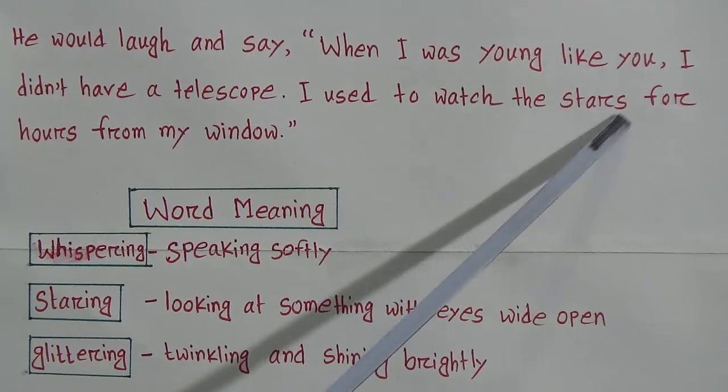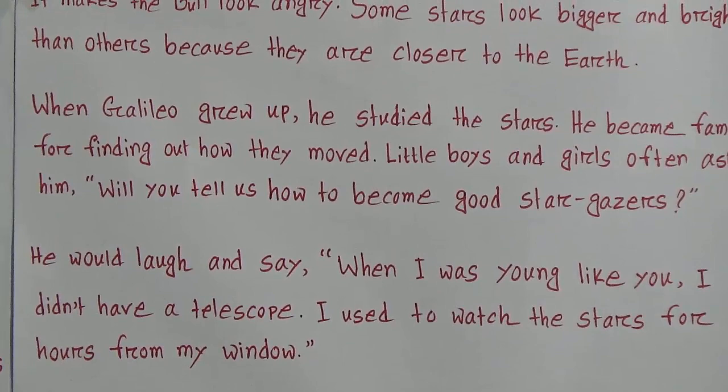Little boys and girls often asked him, 'Will you tell us how to become good star gazers?' He would laugh and say, 'When I was young like you, I did not have a telescope. I used to watch the stars for hours from my window.' Our reading session is done. Now we'll go to word meaning.